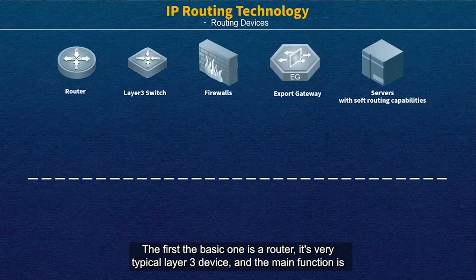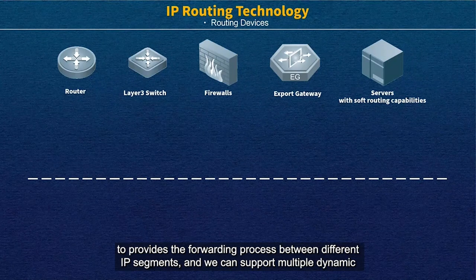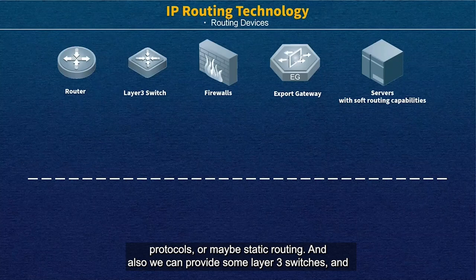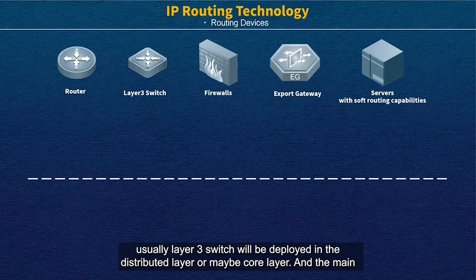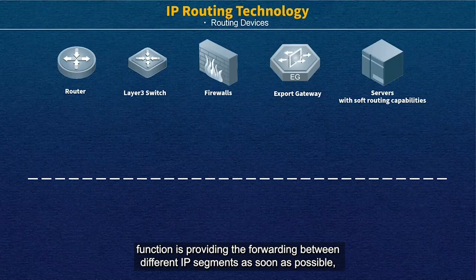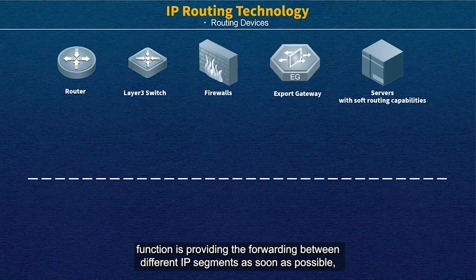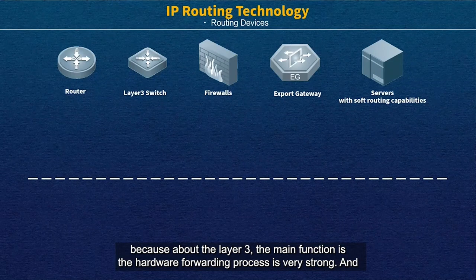The first basic one is a router. It's a very typical Layer 3 device. The main function is to provide the forwarding process between different IP segments. We can support multiple dynamic protocols or maybe static routing. We can also provide a Layer 3 switch, which is usually deployed in the distribution layer or maybe the core layer. The main function is to provide forwarding between different IP segments as fast as possible, because the hardware forwarding process is very strong.